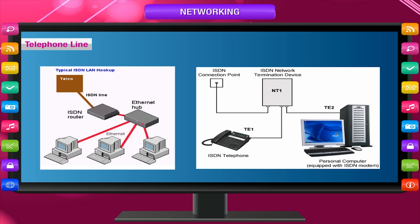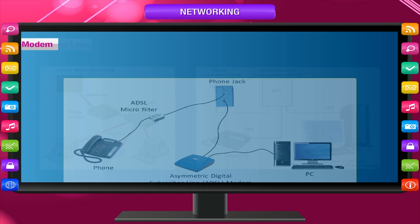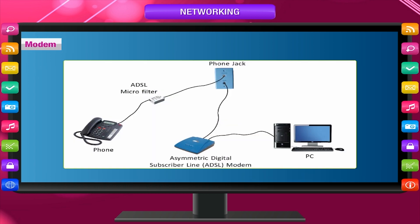ISDN: An integrated services digital network line is needed for transferring data from remote computers to other computers in a WAN. A modem, which stands for modulator demodulator, is a device that allows computers to communicate through telephone or ISDN lines.